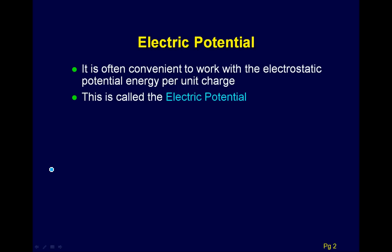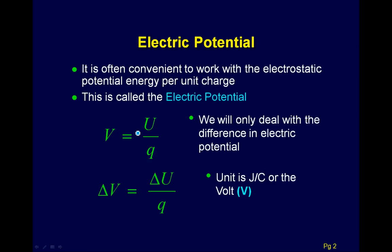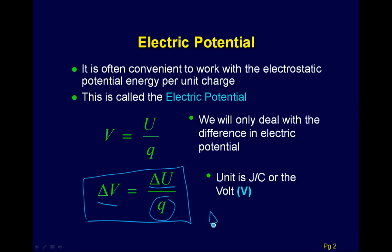Let's look at the electric potential — just a little bit of review. Electric potential is defined as the energy divided by the charge. We're typically interested in the change in the electric potential or the change in the electric potential energy. The difference between them is you're dividing by the charge. The change in the electric potential energy equals the charge times the change in the potential.